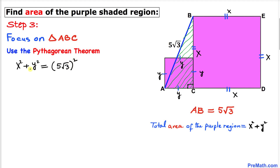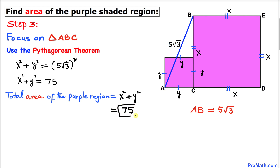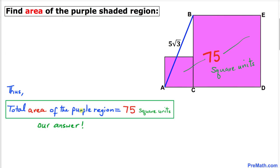Let's simplify this equation. So x squared plus y squared equals five squared, which is 25, times three — that gives us 75. We know that the total area of this purple shaded region is x squared plus y squared, and we've figured out that x squared plus y squared equals 75. Therefore, we conclude that the total area of this purple shaded region equals 75 square units.